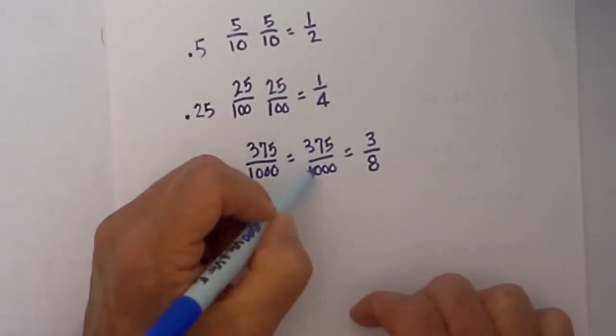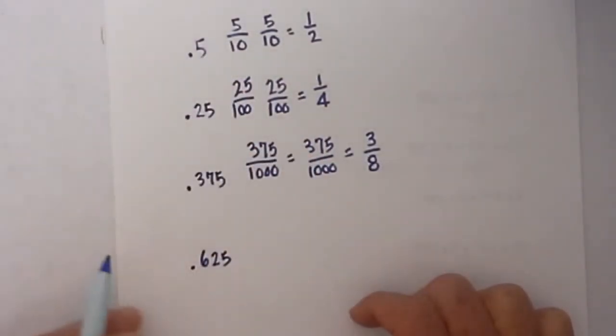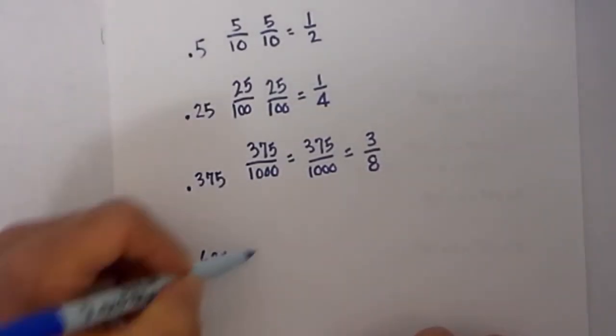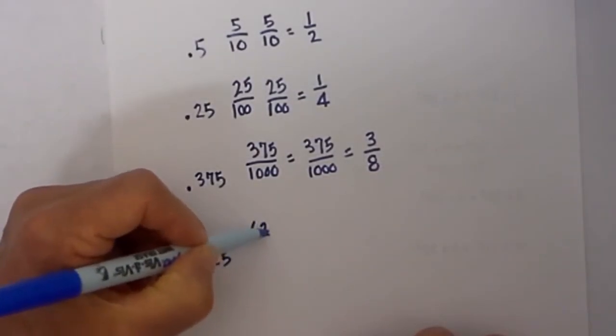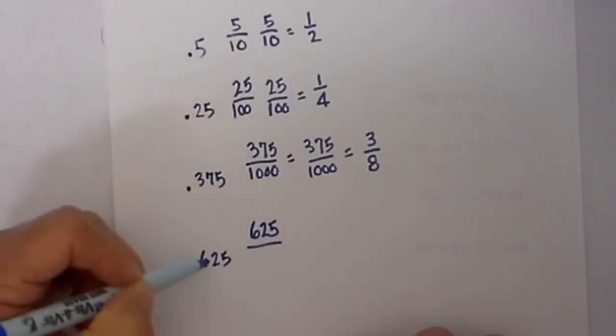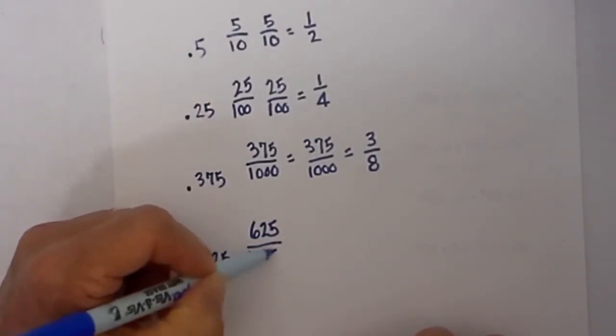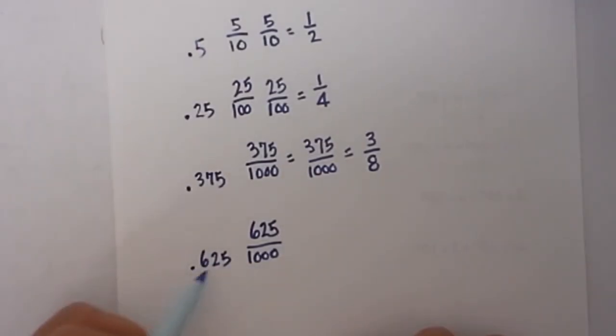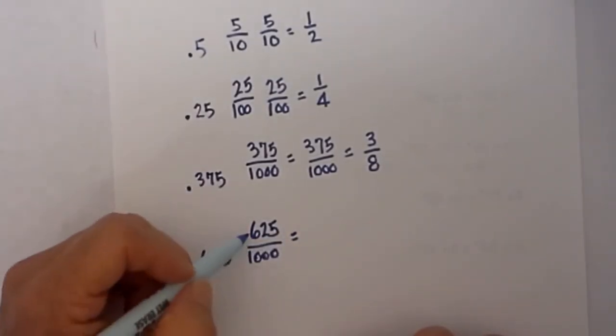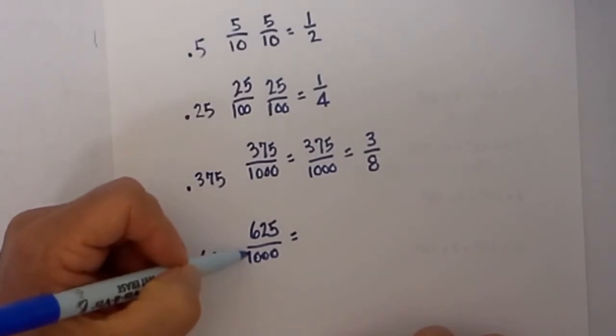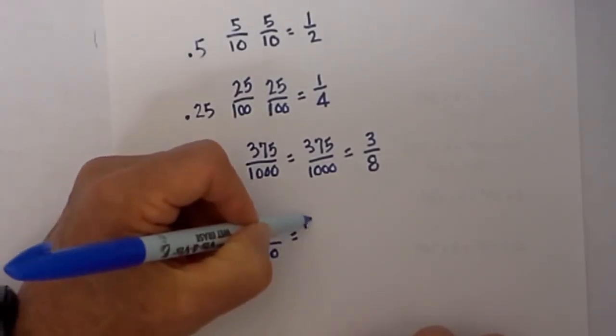Last but not least, 625. The number to the right is 625 over tens, hundreds, thousands. I'm not going to rewrite this one but you can write a one and then three zeros. If we simplify or reduce 625 over 1,000, we can divide it by 125. Divide each side by 125 and that gives you five eighths.